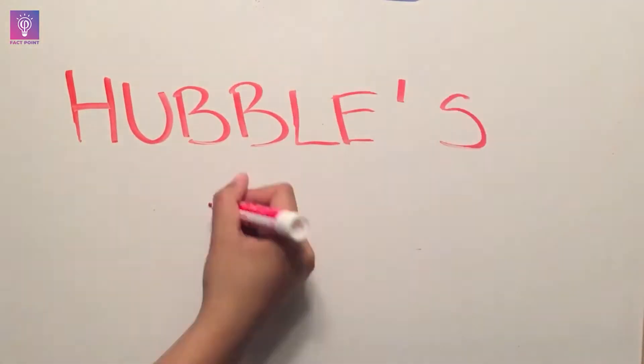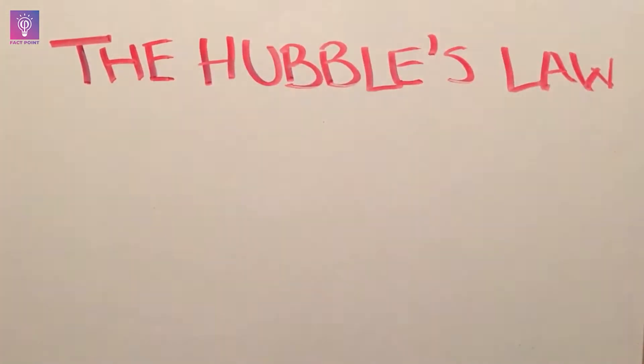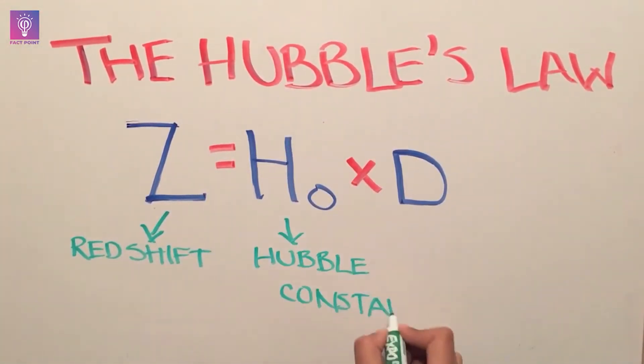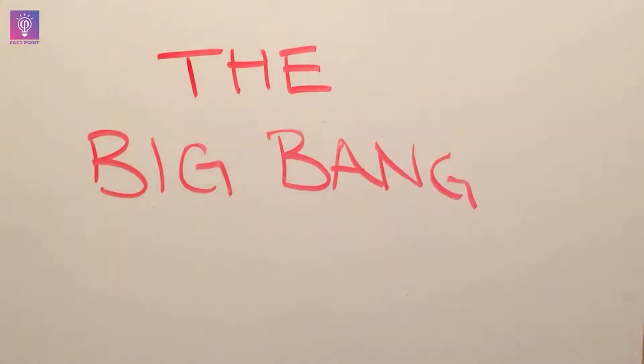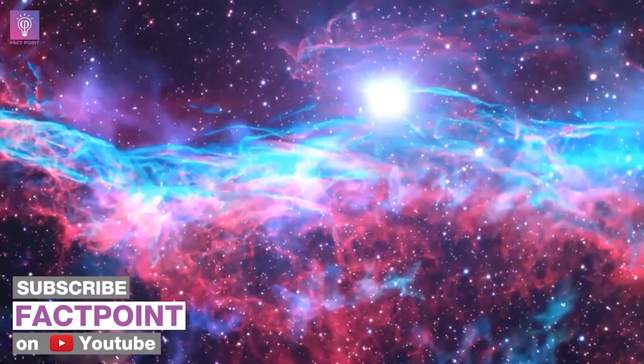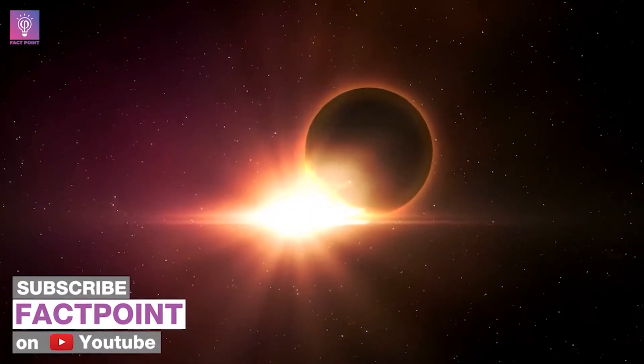This fact, Hubble's law, describing the expansion of the universe, led to a very straightforward interpretation consistent with the Big Bang theory. If the universe is expanding today, then it would have been smaller and denser in the past.